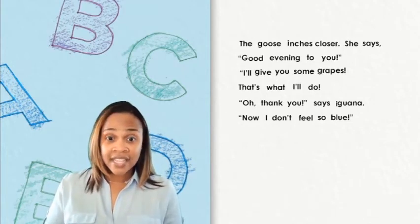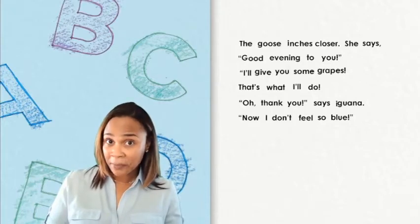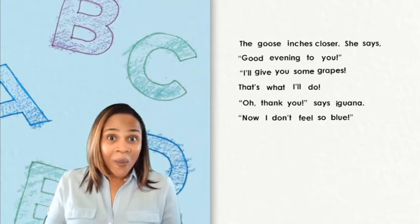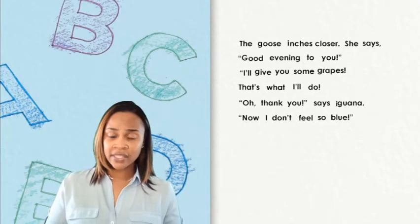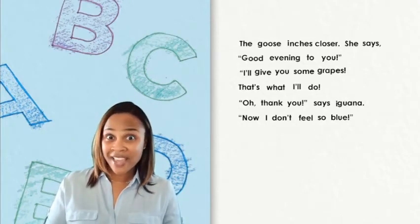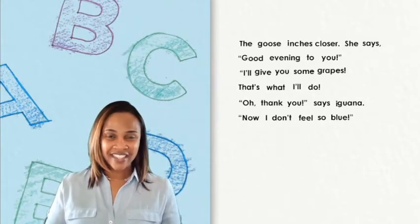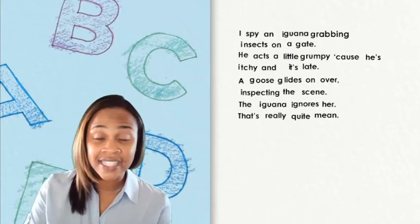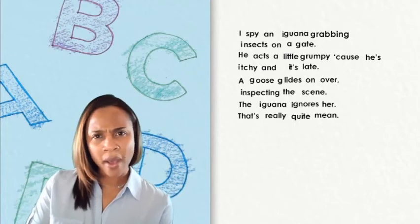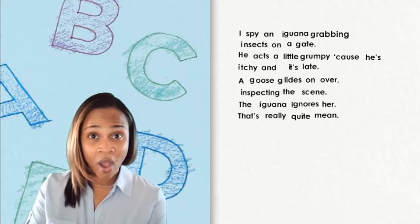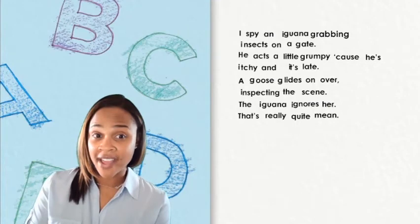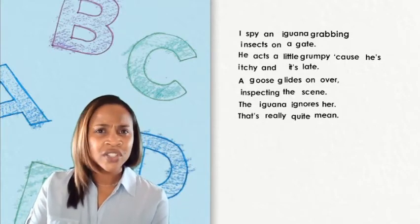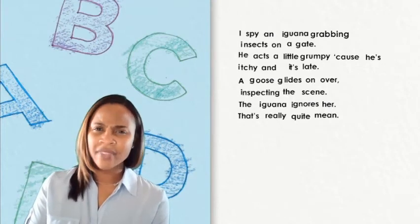Do you see any words in this part of the poem that have two letters in them? I see the words to, do, owe, and so. They all have two letters. I wonder what our mystery word could be. I think we need a clue to help us figure it out. Here's my next clue: the mystery word has the letter O in it. In our poem, do you see any words that have two letters and the letter O? I see on, to, do, owe, and so. They all have two letters and the letter O. I think we need another clue.